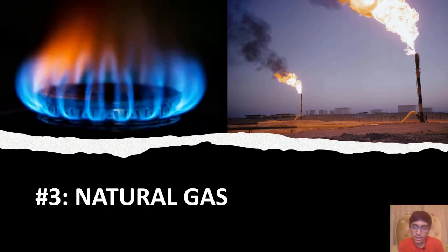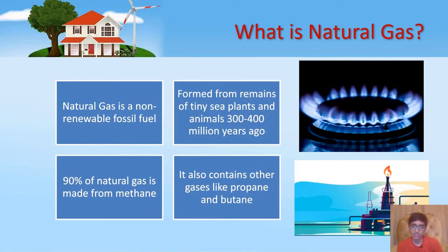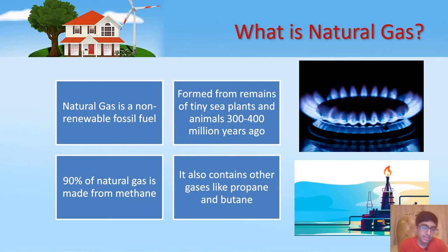Now let's talk about natural gas — we will cover this in more detail later, but right now we'll take an overview. Natural gas is a non-renewable fossil fuel, formed from the remains of tiny sea plants and animals which lived 300 to 400 million years ago. It is made mainly of methane but also contains other gases like propane and butane, and importantly, all these gases are mostly flammable.